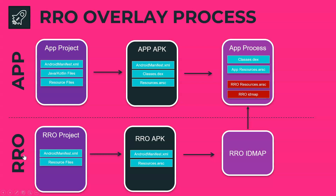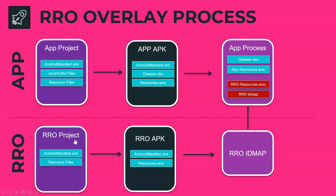A normal RRO project consists of only an AndroidManifest.xml and the resource files. On compilation, this gets converted into an RRO APK containing the AndroidManifest.xml and the resources.arsc file — the compiled form of the resources. During execution, the app process picks up this resources.arsc, looks at the RRO id map to get the corresponding resource ID for the overlayable resource, and overlays the app resources.arsc with the RRO resources.arsc. Only the particular resource being overlaid gets changed — for example, if you are only overlaying a layout XML, only that XML will be overlaid; the rest of the resources are used from app resources.arsc.